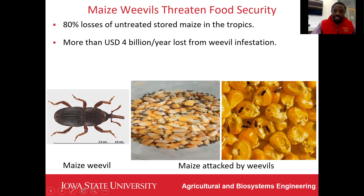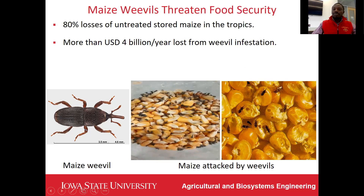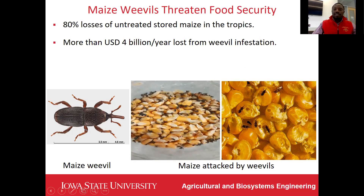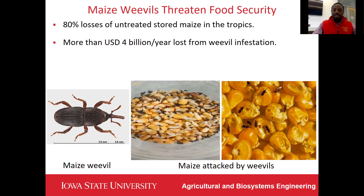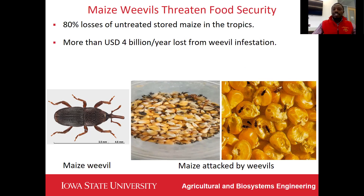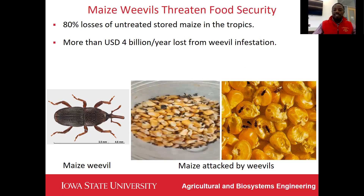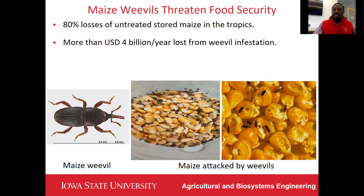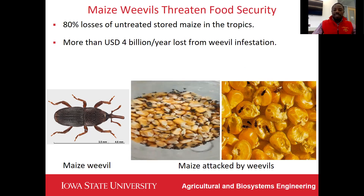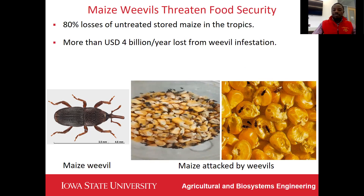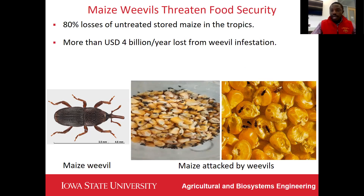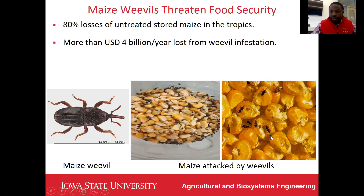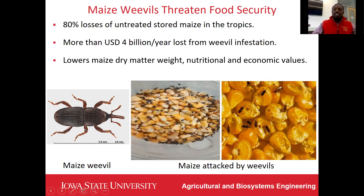In this video, you can see the aggressiveness of the maize weavers. As eggs hatch into larvae, pupae, and adult stages, they feed on the endosperm in the kernel, leaving it empty as adult weavers exit the holes, as you can see in picture three. This lowers the maize dry matter weight, as well as its nutritional and economic values.